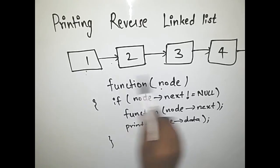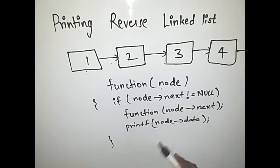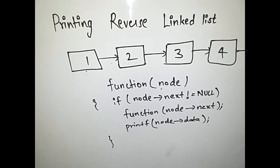This continues till it reaches the last node and then when the next of the last node is pointing towards null, this if condition is not executed and the last node is printed. And then it comes out of the recursive function and it comes back. So I will show you how this function actually works.